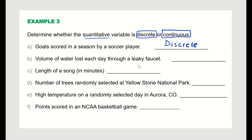Length of a song in minutes can be 4.1 minutes or 4.7 minutes — it is not restricted to whole numbers and can take decimal values — so the length of a song is a continuous variable.